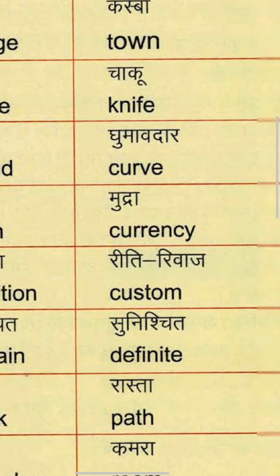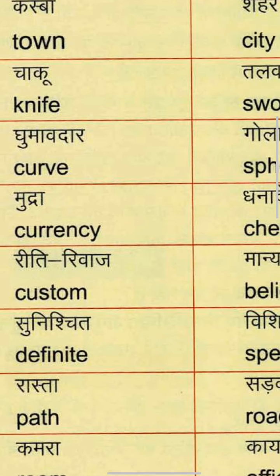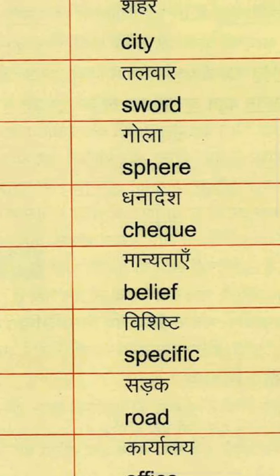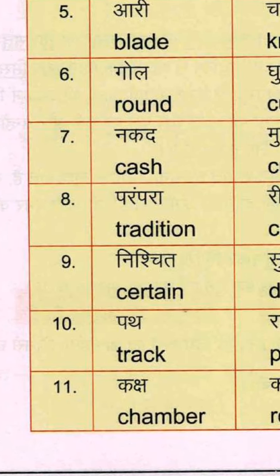Fifth group: Blade — referring to Chakoo. Knife — K-N-I-F-E, meaning Chakoo. And Talwar, which is Sword — S-W-O-R-D.